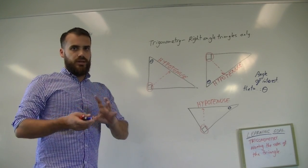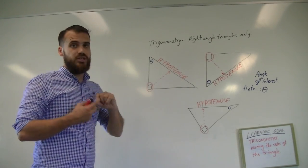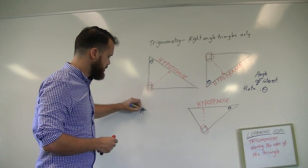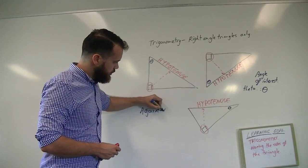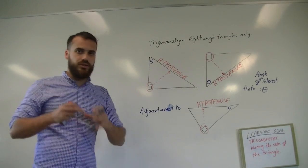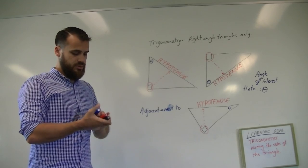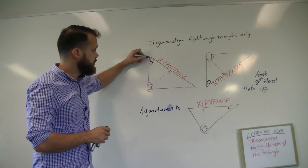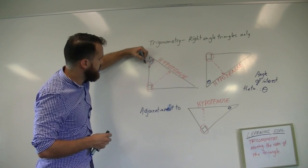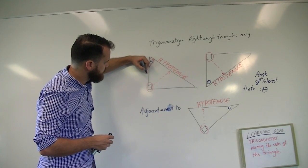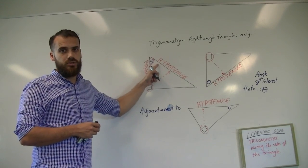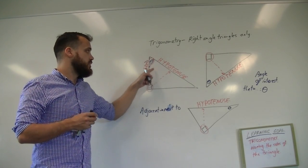The easiest way to proceed is to find the adjacent side next. The word adjacent means next to — specifically, next to the angle of interest. Here's our angle of interest; the side that is next to it is our adjacent. You'll notice there are actually two sides next to the angle of interest, but one of them we've already labeled as the hypotenuse, so it's the other side — the one that isn't the hypotenuse — that's the adjacent.